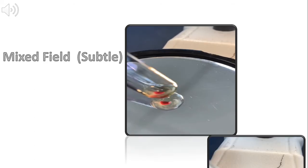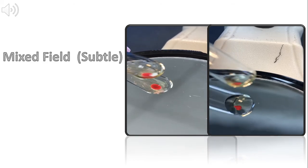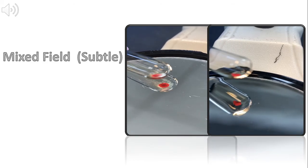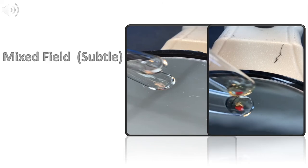For comparison, the video on the right has no mixed field present. The video on the left has subtle mixed field. As an example of when this may occur is a patient who has been transfused several weeks ago and therefore patient cells predominate while donor cells are minimal.